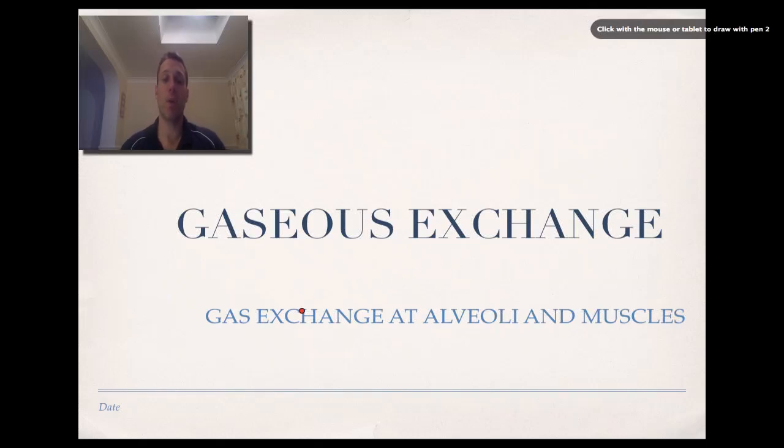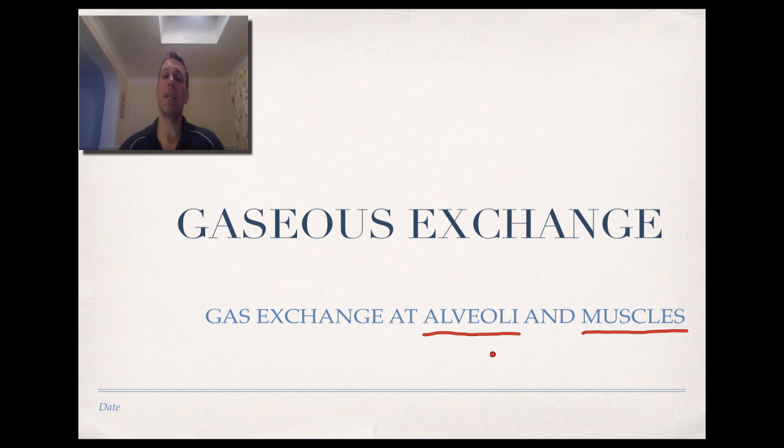Gaseous exchange - we're going to concentrate on the exchange that happens at the alveoli, those tiny little air sacs in the lungs, and then move on a little bit towards the muscles, although we're mainly concerned with this exchange that happens at the alveoli between oxygen and the carbon dioxide that leaves the body.